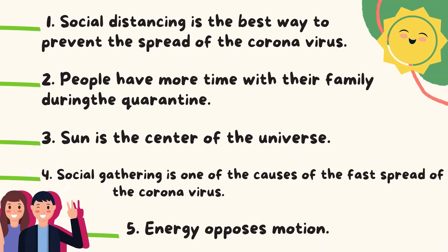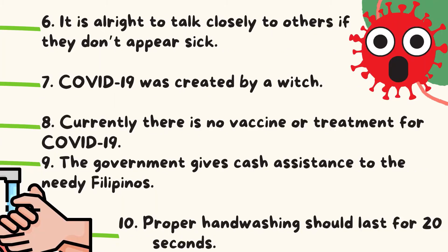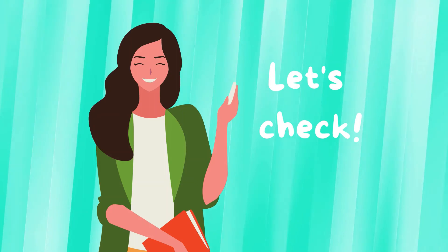One: social distancing is the best way to prevent the spread of the coronavirus. Two: people have more time with their family during the quarantine. Three: the sun is the center of the universe. Four: social gathering is one of the causes of the fast spread of the coronavirus. Five: energy opposes motion. Six: it is alright to talk closely to others if they don't appear sick. Seven: COVID-19 was created by a witch. Eight: currently there is no vaccine or treatment for COVID-19. Nine: the government gives cash assistance to needy Filipinos. Ten: proper hand washing should last for 20 seconds.